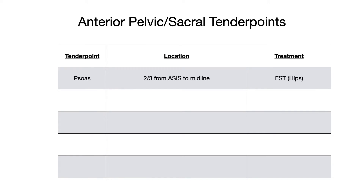Our next tender point is the iliacus. The iliacus tender point is located one-third of the way from the anterior superior iliac spine to the midline where the vertebrae are. The treatment position for the iliacus tender point is flexion, abduction, external rotation — also known as the frog position, or FABER.